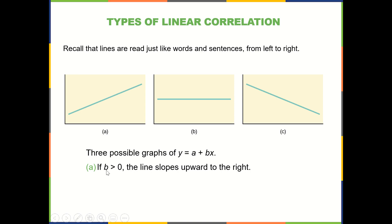So if your slope is greater than 0, or in other words, positive, the lines go upward from left to the right, so increasing.